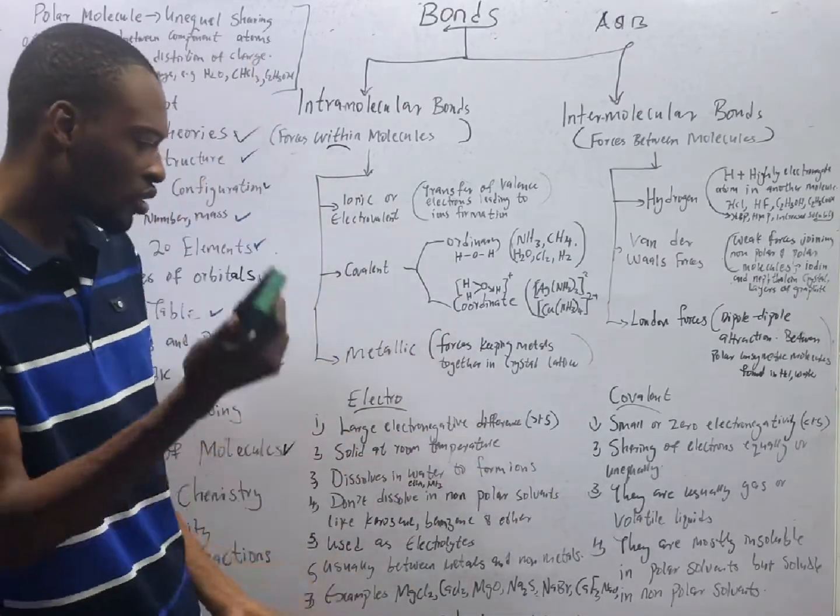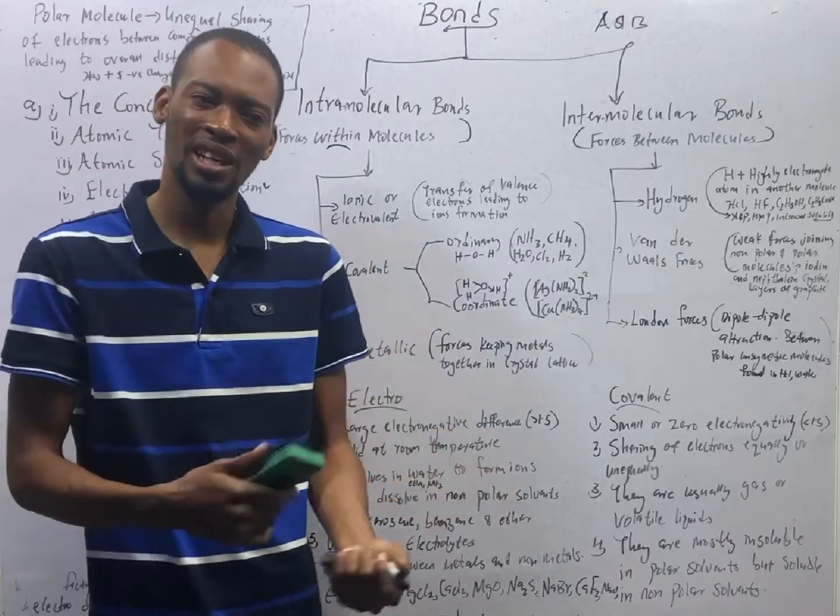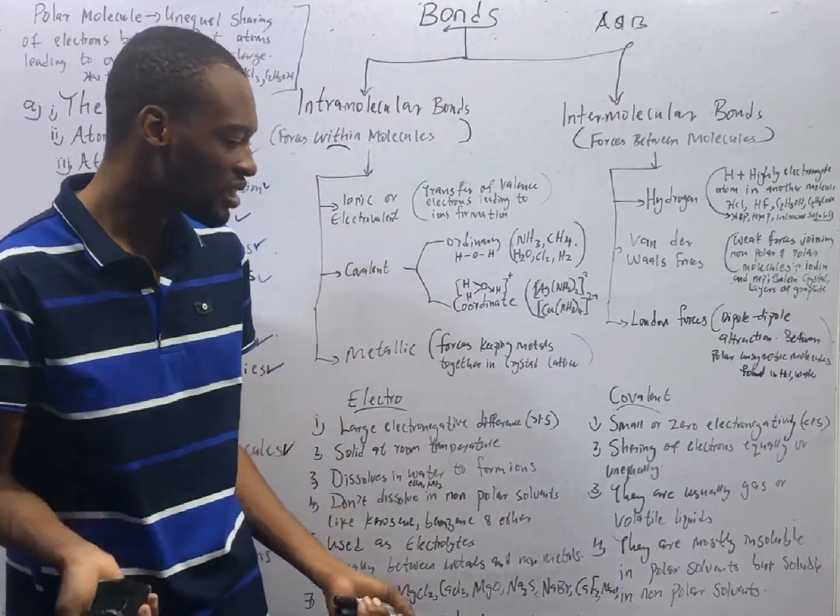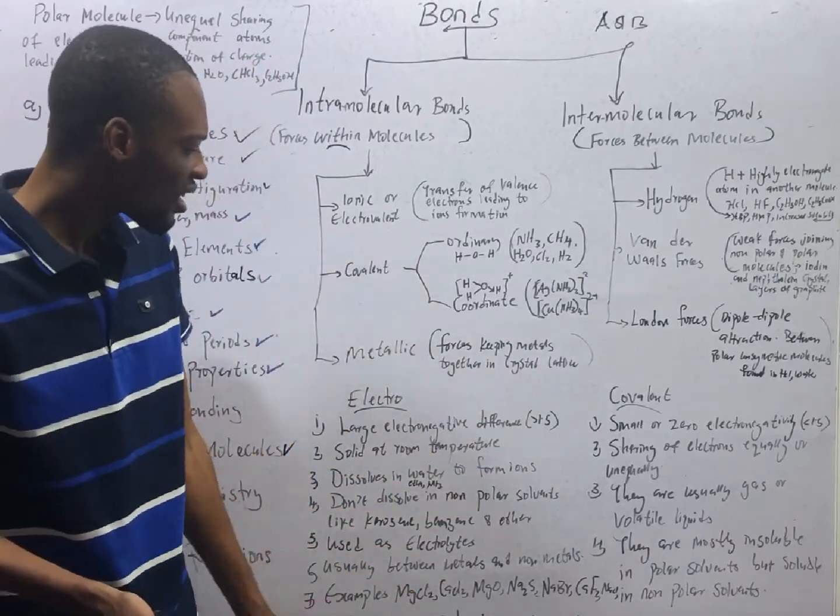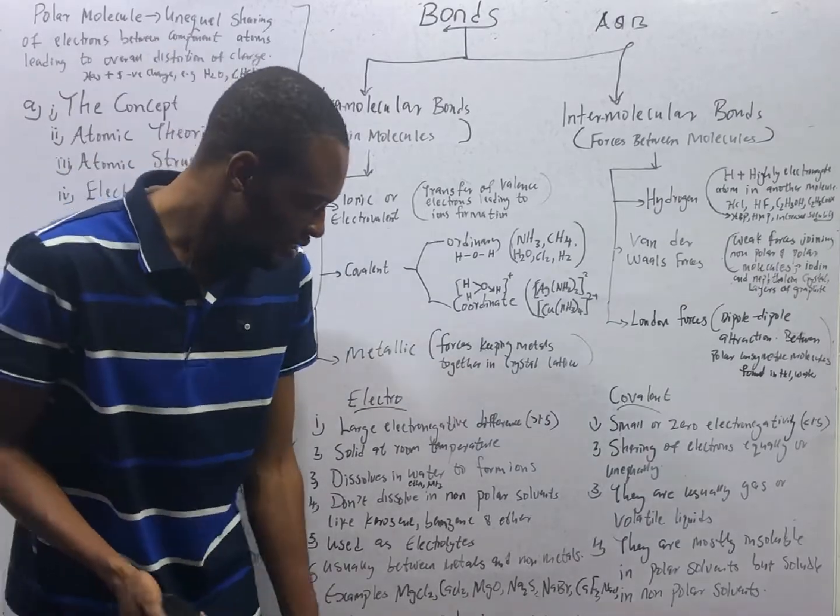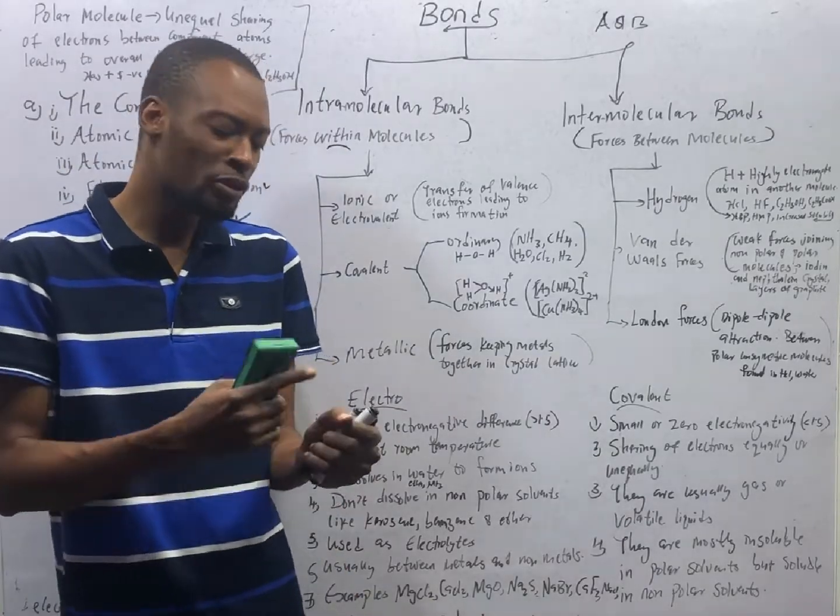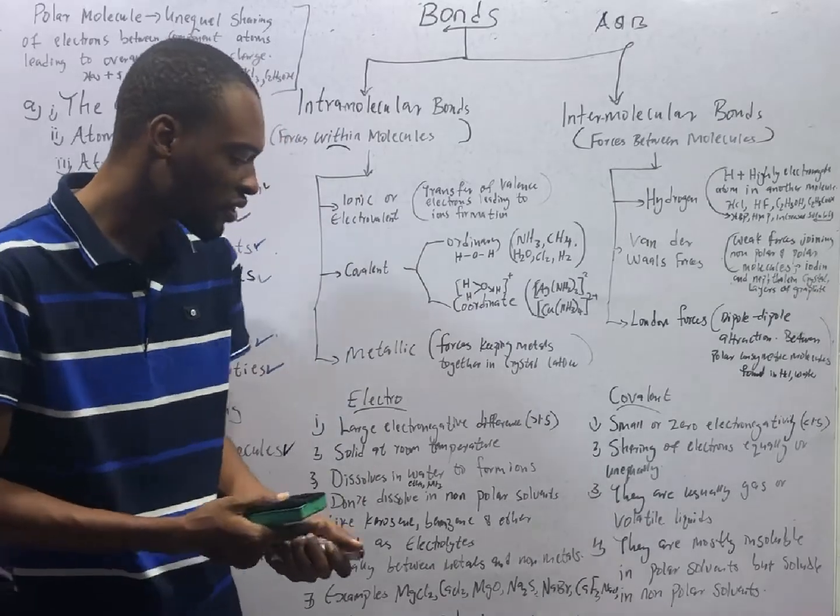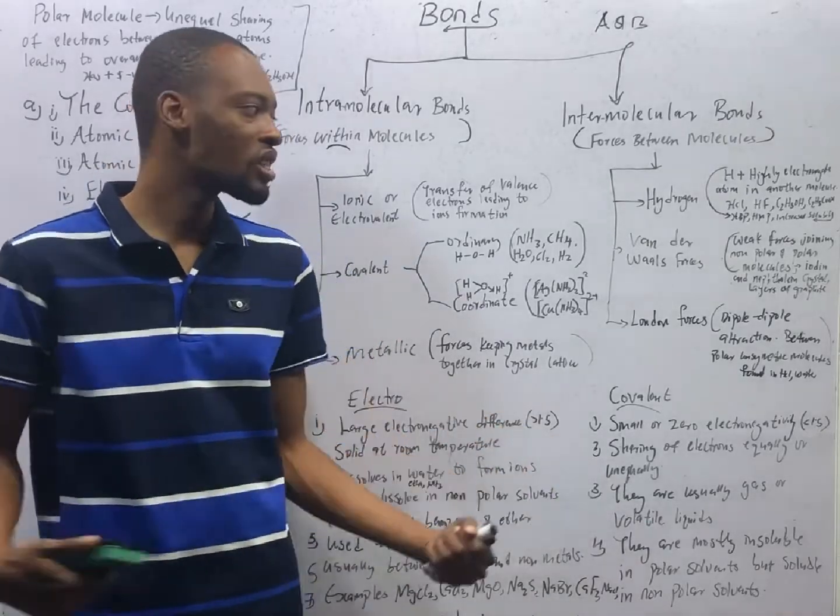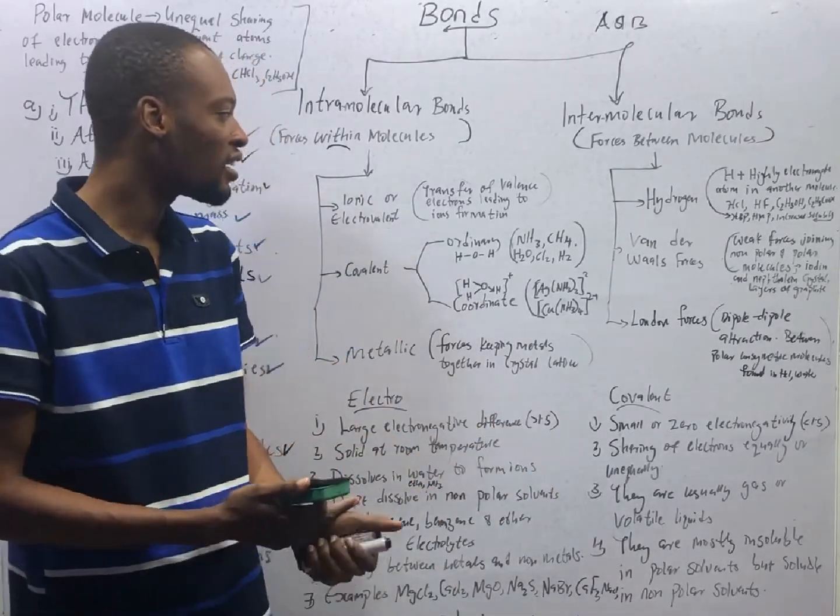Group 1, group 2, and group 7. That is basically it. And electrovalent compounds, they have high melting points and high boiling points. This is because of the great strength between them. High melting points and high boiling points.